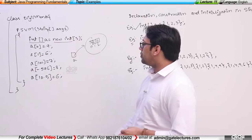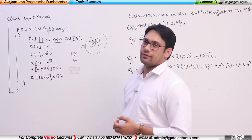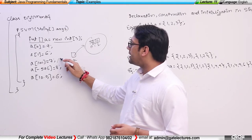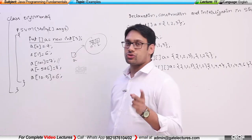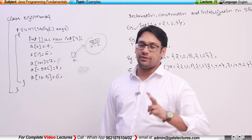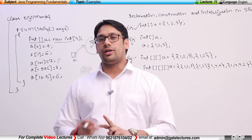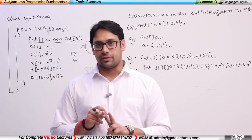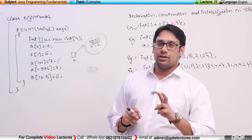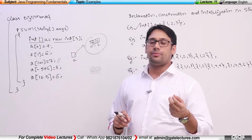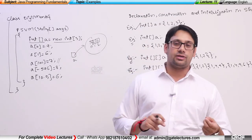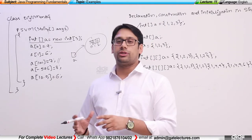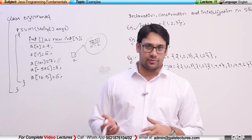Now here I am trying to do a[100]=7. What happens here is there will be no compile-time error. Remember, we have two kinds of errors: one is compile-time error and the second is runtime error. A compile-time error occurs when we compile the program, but a runtime error only occurs when we run or execute the program.